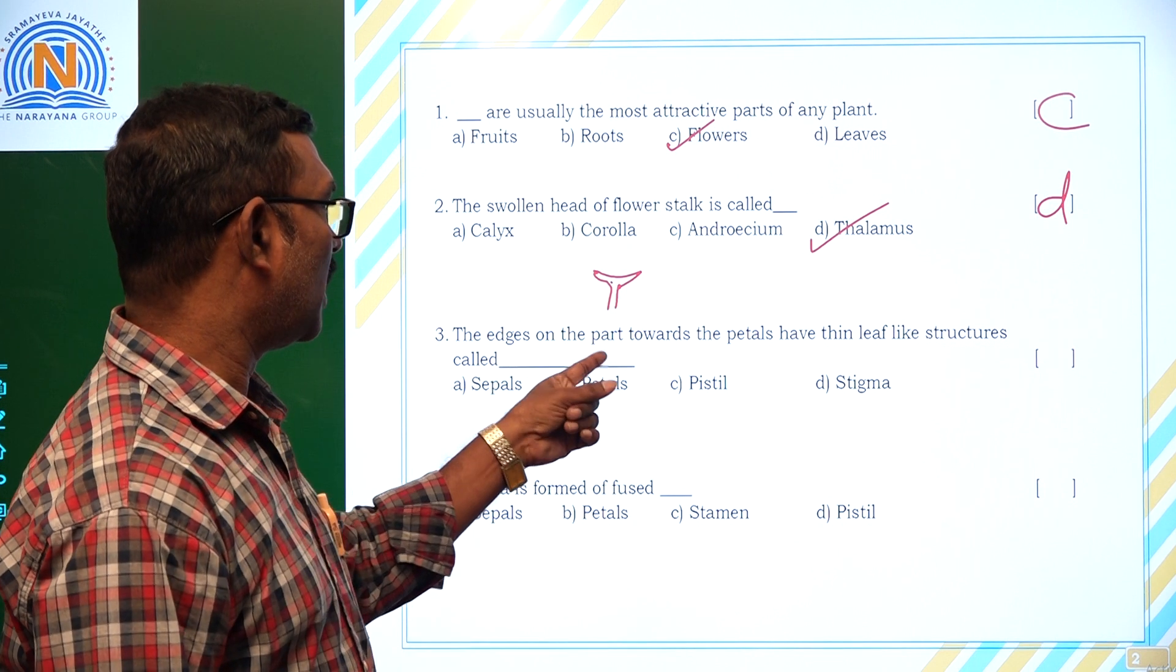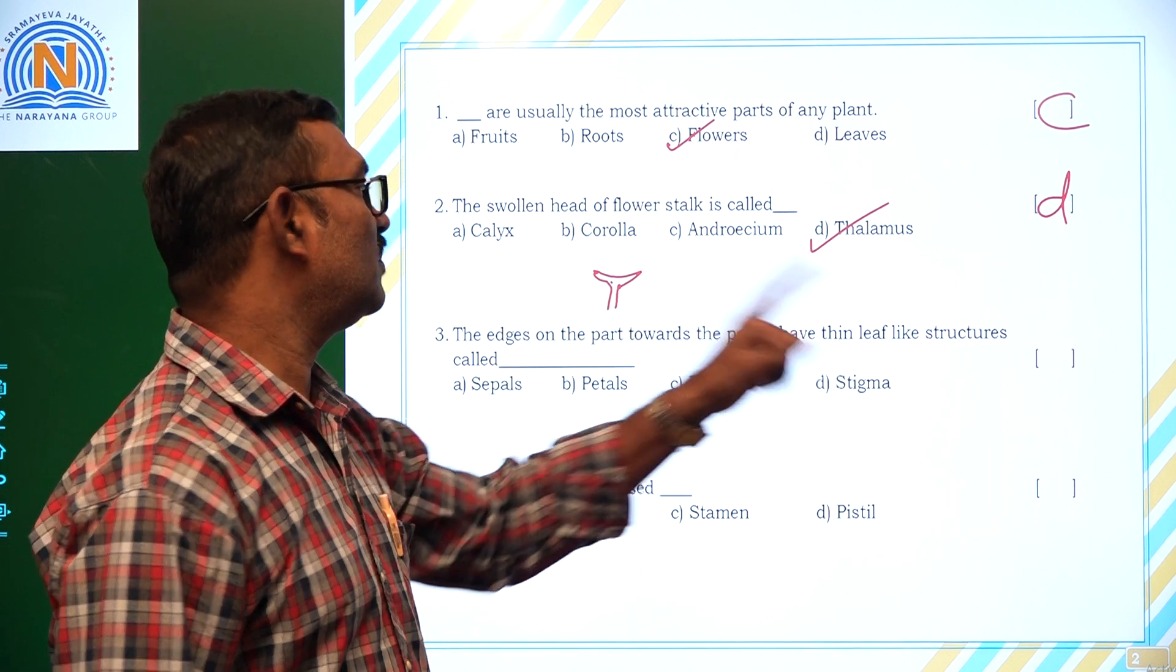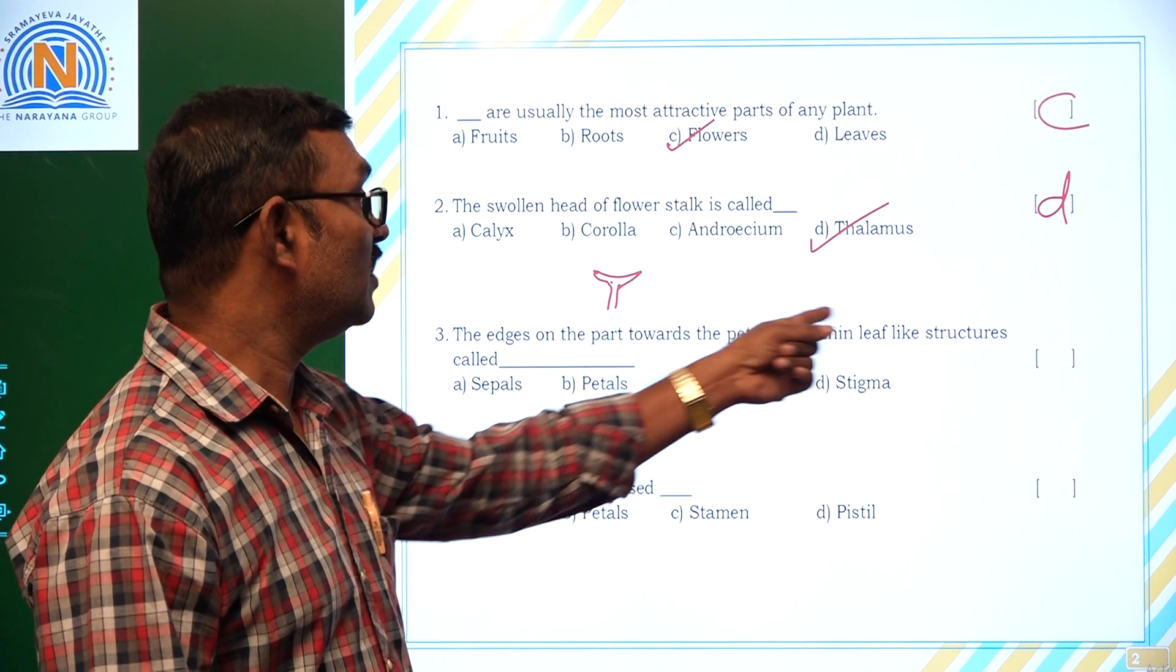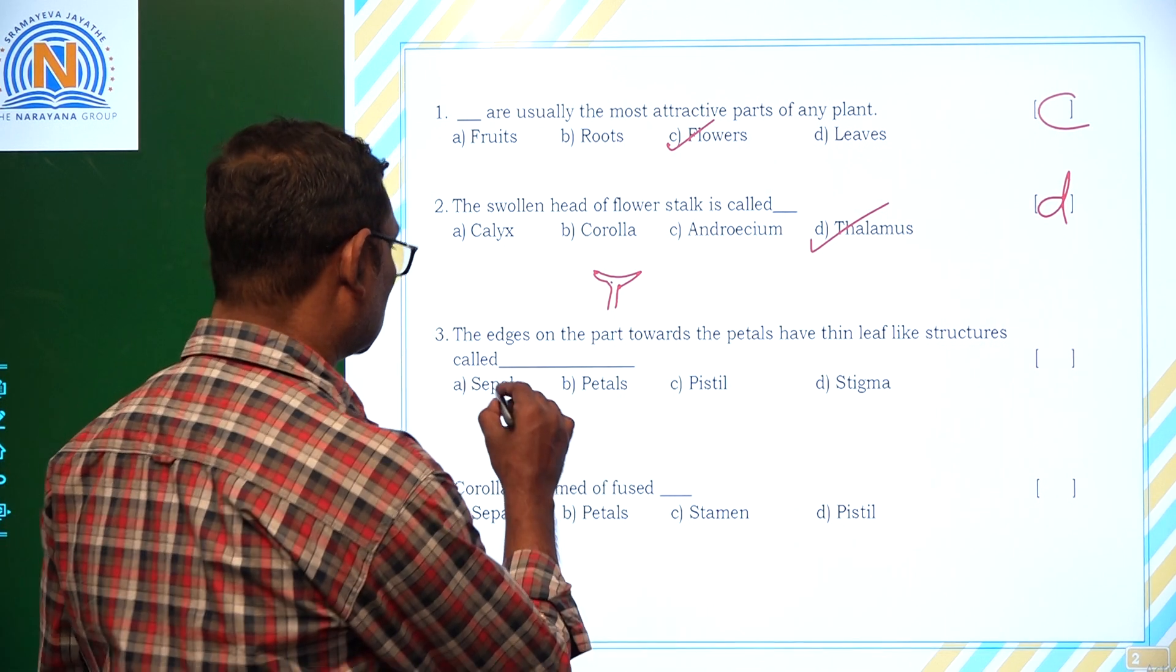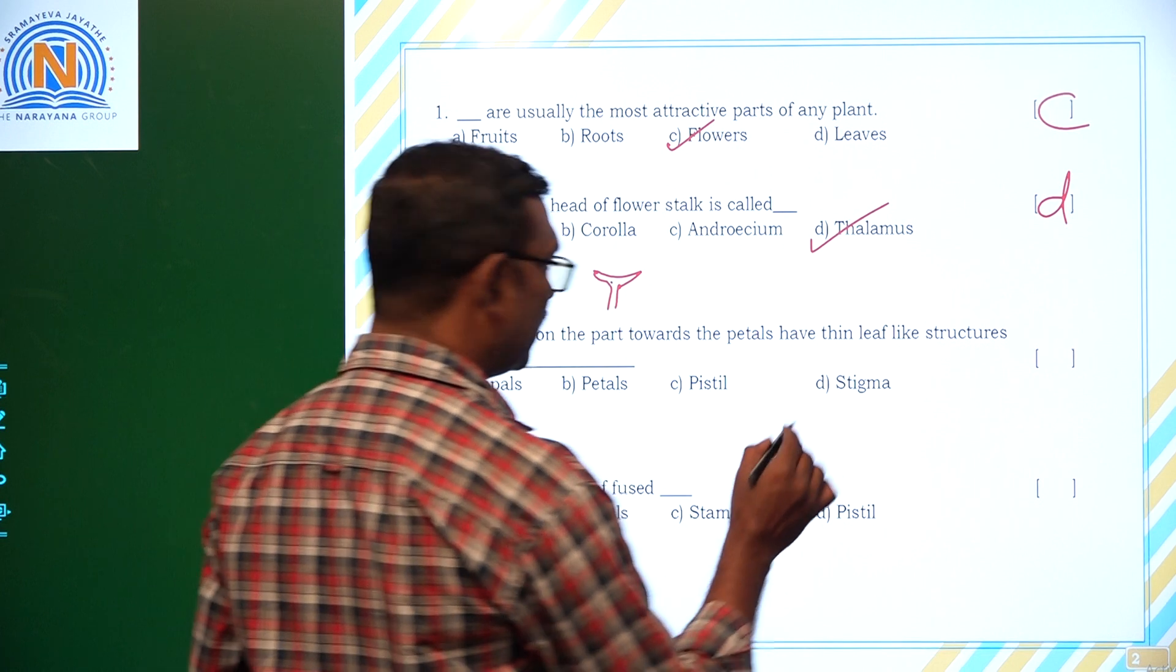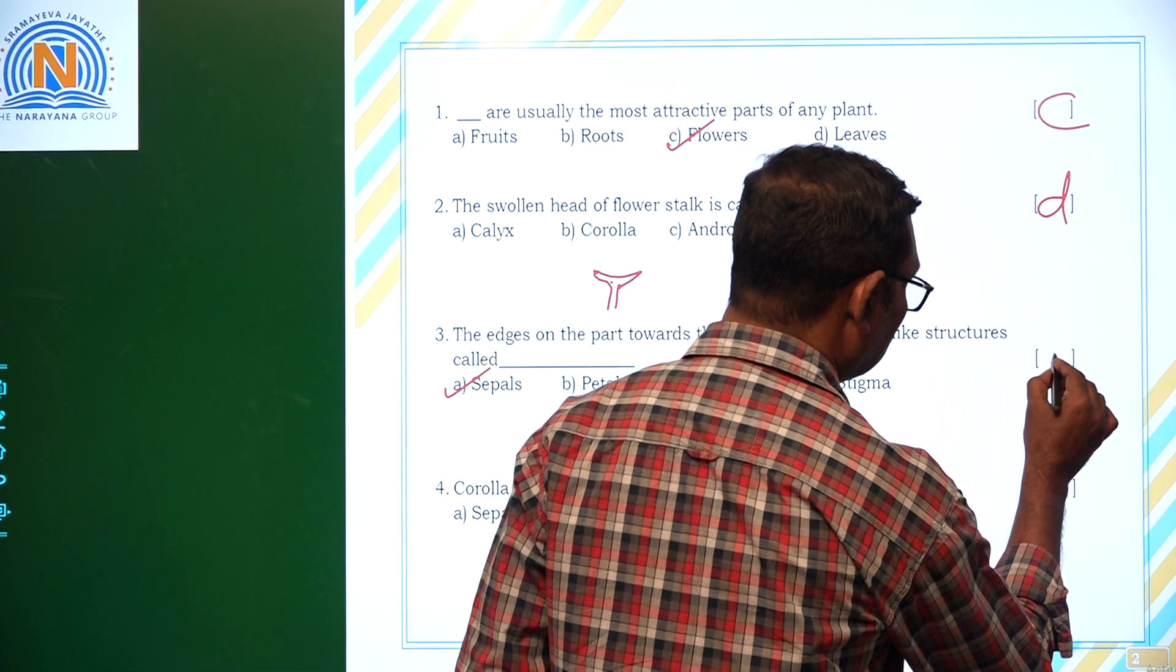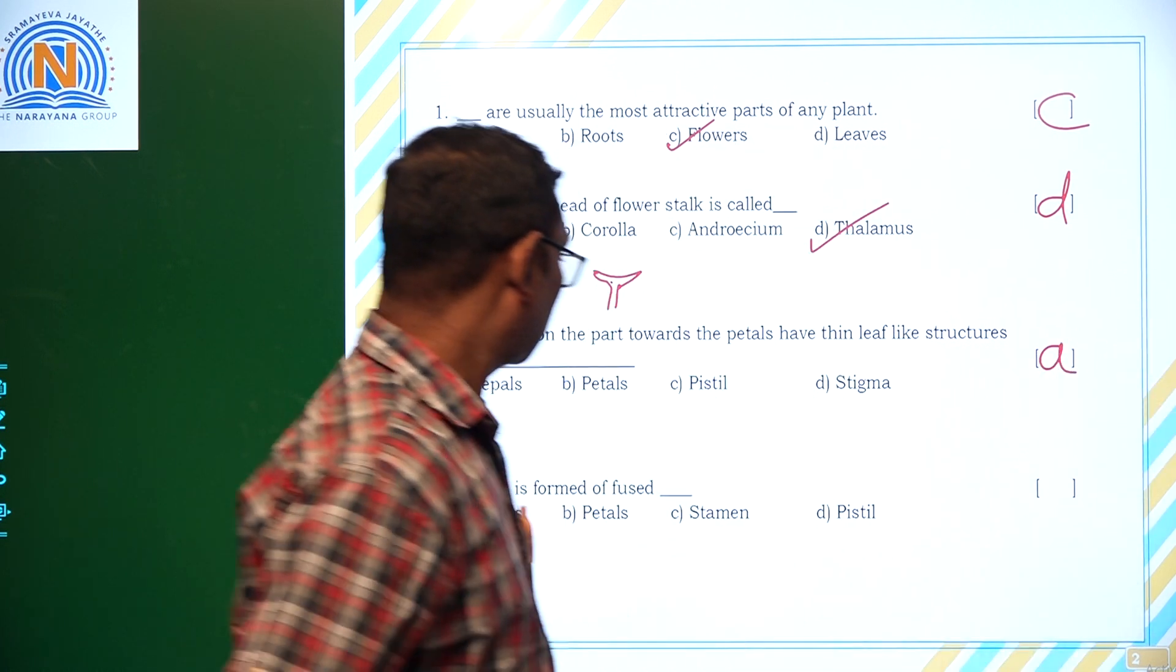The edges on the part towards the petals have thin leaf-like structures called thin leaf-like structures called sepals. Outside the petals there are sepals. Right.